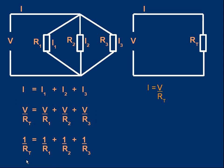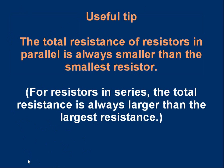Some useful tips about the resistance of resistors in parallel. First tip: the total resistance is always smaller than the smallest resistor. So if you have three resistors — 1 ohm, 2 ohms, and 3 ohms — the total resistance in parallel will be less than 1 ohm. Notice that's the opposite of resistors in series, where the total resistance is always bigger than the largest single resistor.